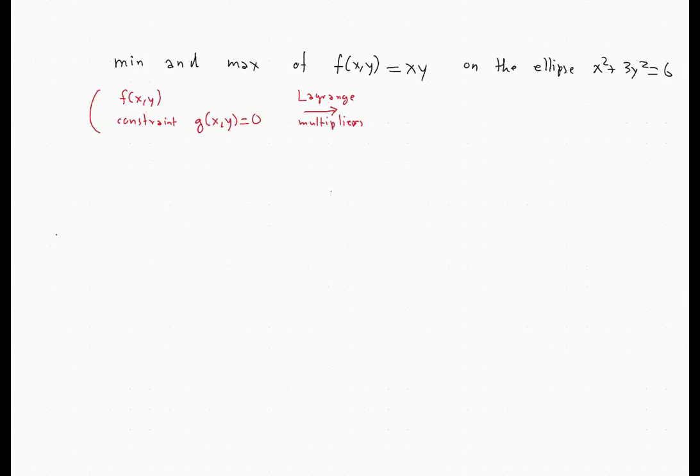The system is: the gradient of f equals lambda times the gradient of g, and g equals 0. The first equation is an equation between two vectors, so it breaks down to two equations. So what we really have is a system of three equations with three unknowns. So let's solve it.